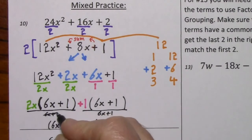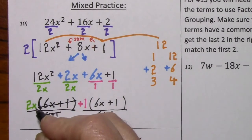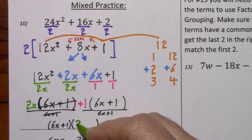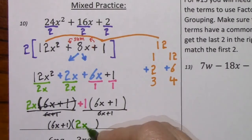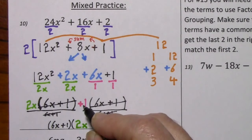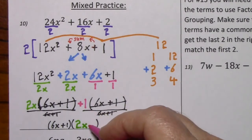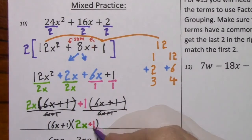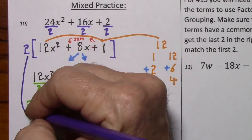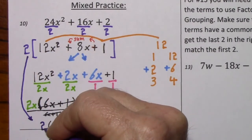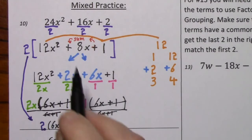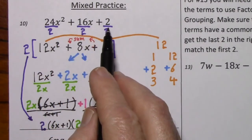When we factor it out from here, we're left with 2x. When we factor it out from here, we're left with plus 1. And don't forget to bring this 2 down. So here's the factored form of the original polynomial.